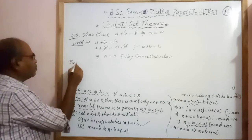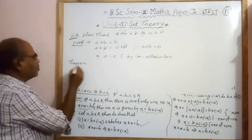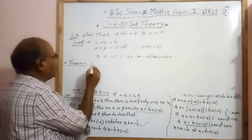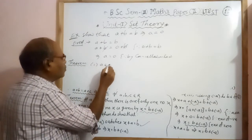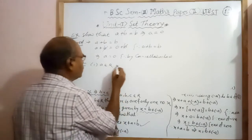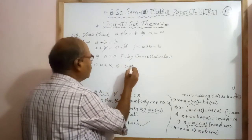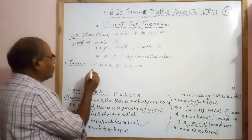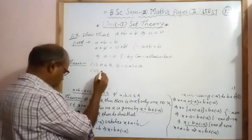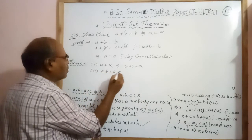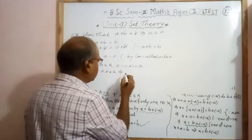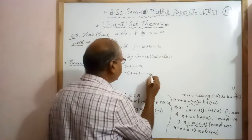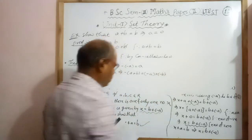Now I will prove the theorem. First: A belongs to R implies minus of minus A equal to A. Second: if A, B belong to R, then minus of A plus B equal to minus A plus minus B.